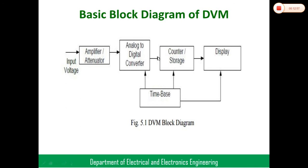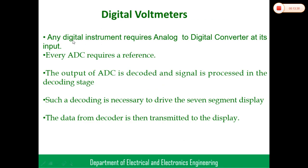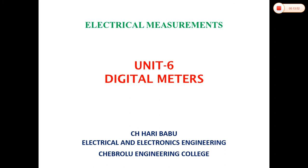The decoded output from the processing unit is used to drive a seven-segment display. Data from the decoder — which may include a counter or storage — is transferred to the display. The data transmission elements can be latches or counter sets as required. The digital display then shows the final digital result of the measurement. This concludes the introduction to digital voltmeters. Next, we move on to the classification of digital voltmeters.